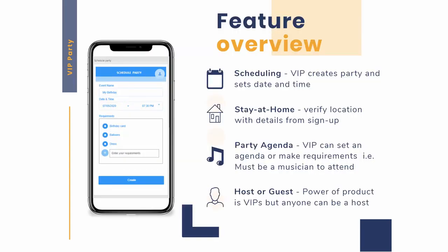A few of the unique features about VIP Party which help keep people home and reduce loneliness include pre-scheduled parties that only give a window of time when they start, requiring users to be at home to use the app, creating agendas users are interested in participating in, and the simple fact that you may get to chat with a VIP.